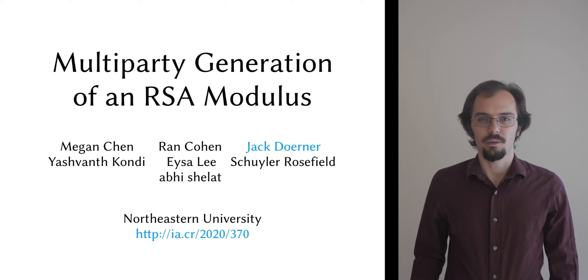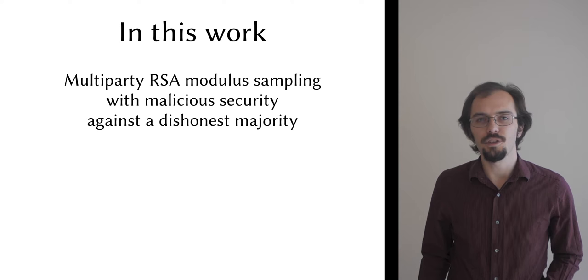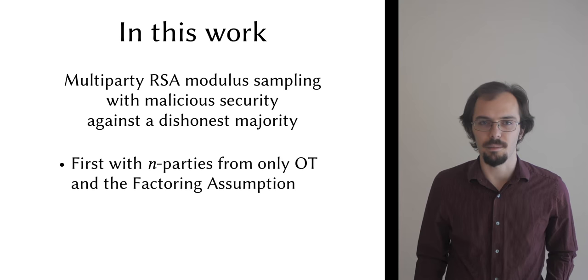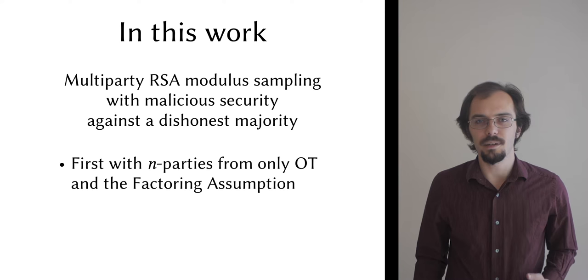It will appear at Crypto later this summer and you can find it on ePrint today. In this work, we introduce a new protocol for distributed RSA modulus sampling with malicious security against a dishonest majority in the UC model. Ours is the first such protocol from only oblivious transfer and the factoring assumption to support an arbitrary number of parties, and so far as we know, the first to achieve cubic complexity or better in the length of the modulus.